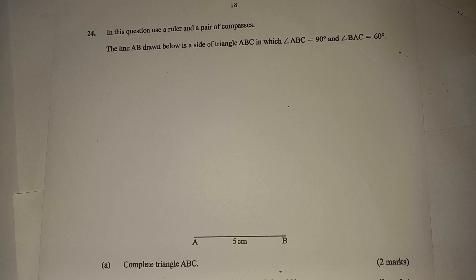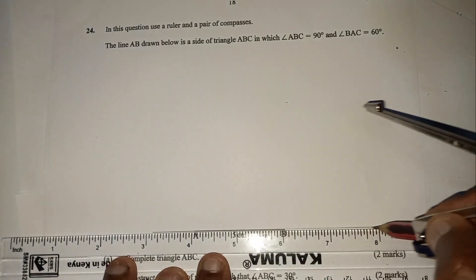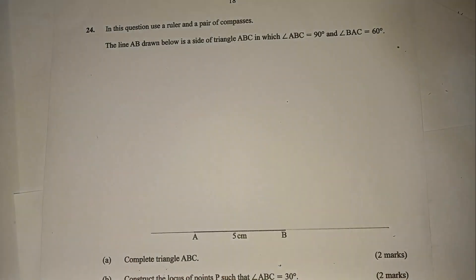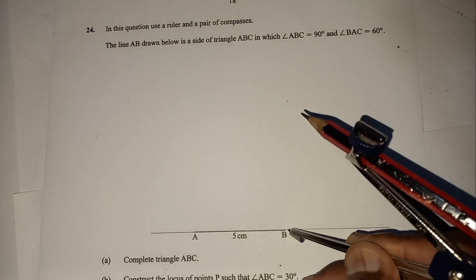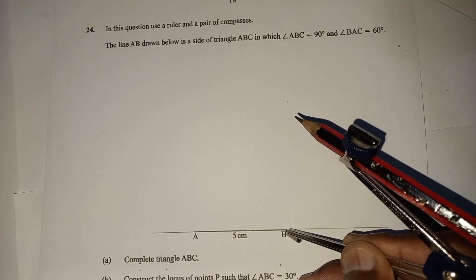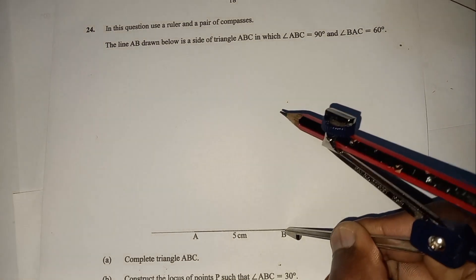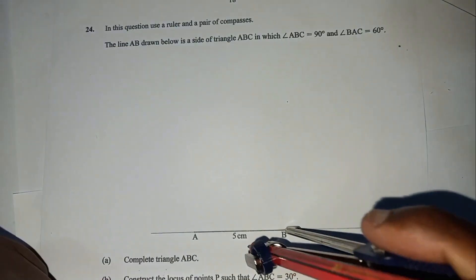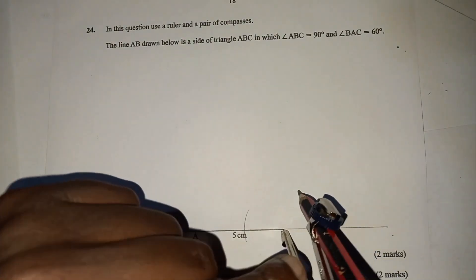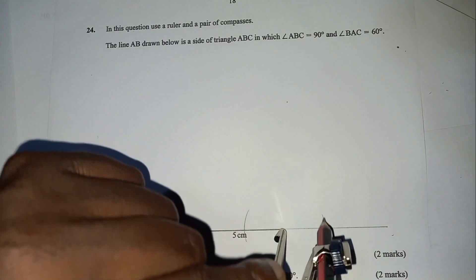So I have to extend this line — we extend this line like that — and this is how we construct the angle of 90 degrees at B. Standing at B, open your pair of compasses and mark two arcs like that.